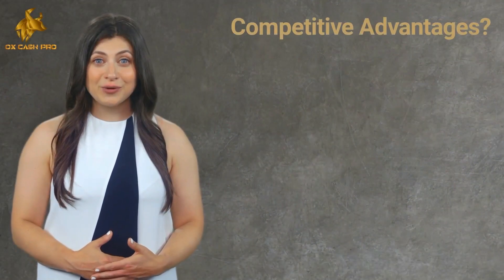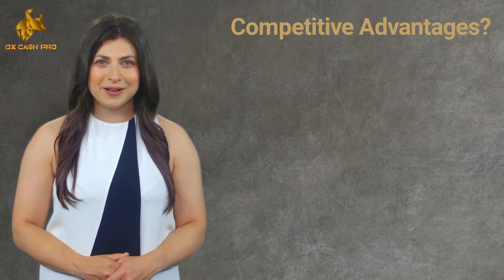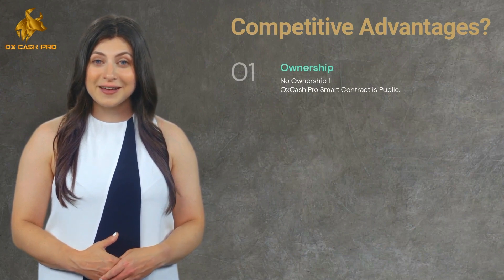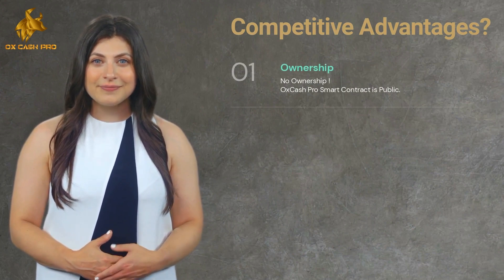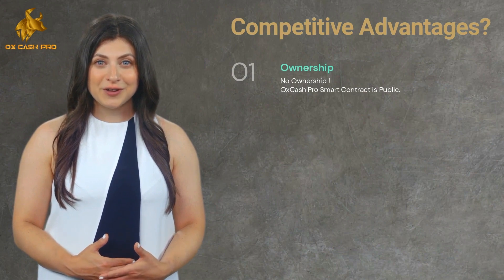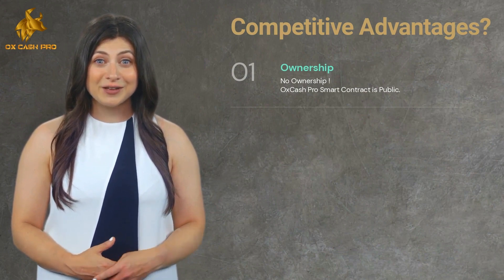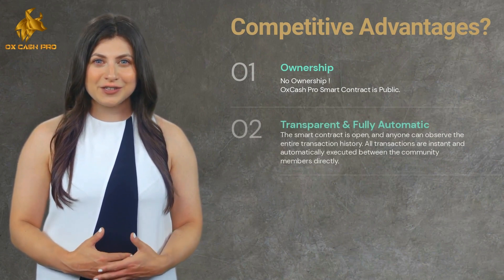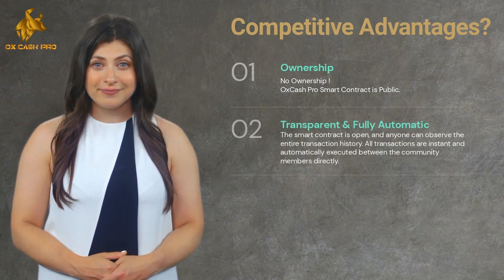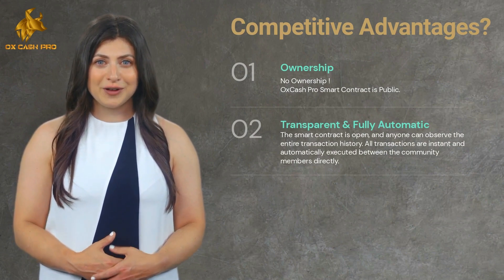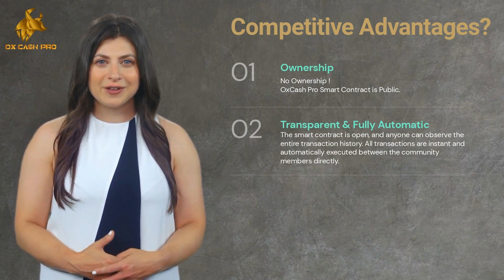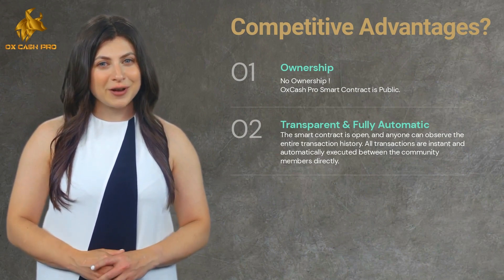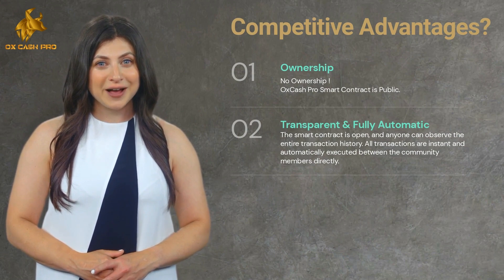Now let's talk about our competitive advantages. First is ownership — there is no ownership; the AuxCash Pro smart contract is public, meaning no one can control your assets or wallet except you. Second is transparency and full automation — the smart contract is open, so you or anyone can observe the entire transaction history anytime. All transactions are instant and automatically executed between community members directly, without any middleman.